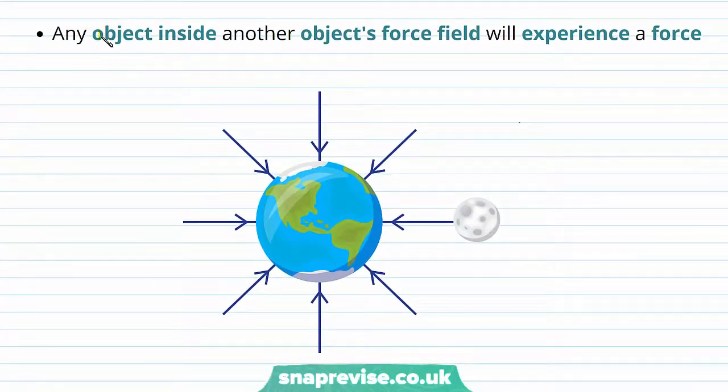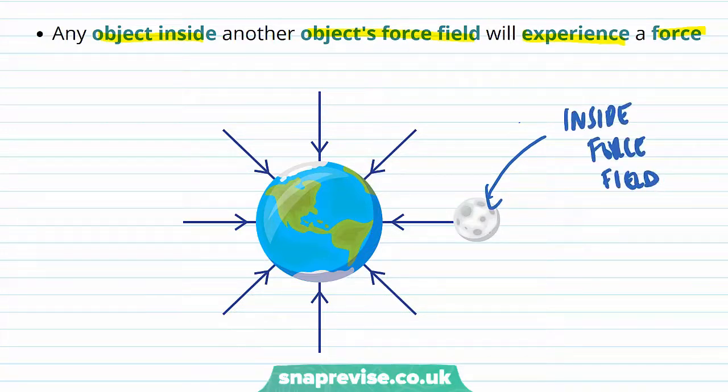Any object that is inside another object's force field will experience a force. So for example, the Moon is inside the force field of the Earth, and therefore it's going to experience a gravitational force of attraction towards the Earth.